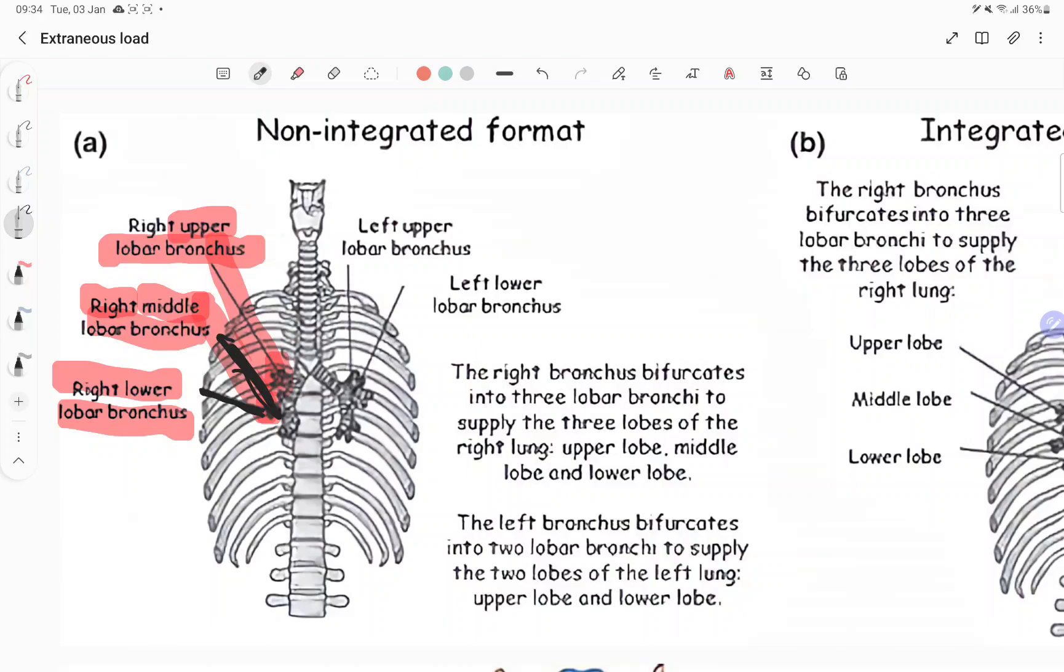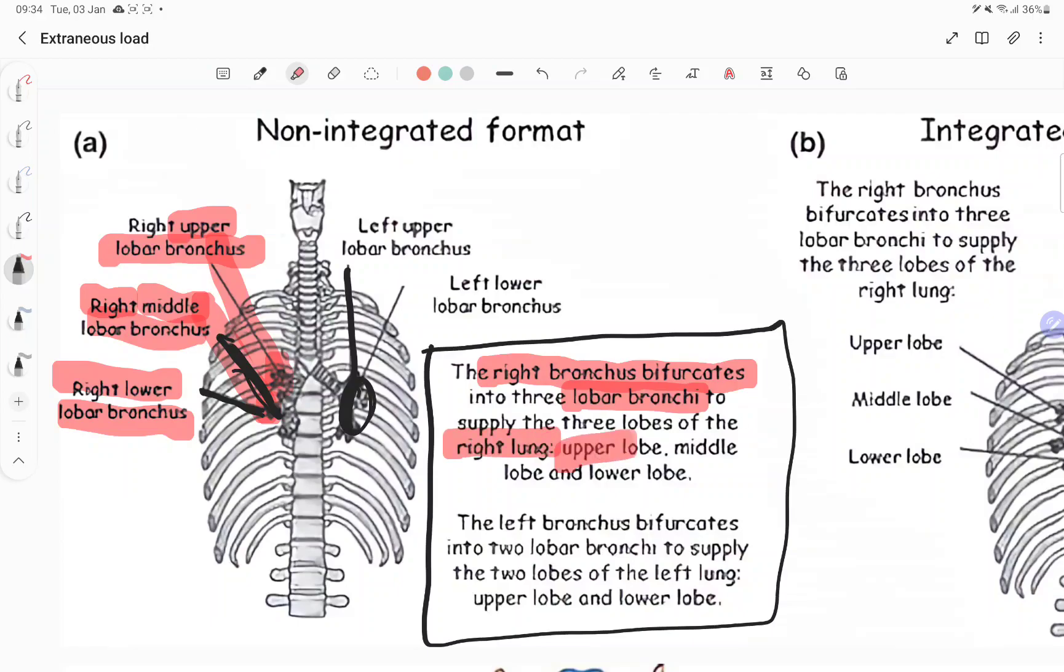And when you go to the left, you see that the left upper one, well there it is. But you can't quite work out where this lower one is. Where is it over here? You can't really see. And then they give all the information about the two over here. And what I want you to look out for is the way they go, the right bronchus bifurcates into three lobar bronchi supply the three lobes of the right lung, upper, middle, lower. And they keep on repeating stuff over and over again.